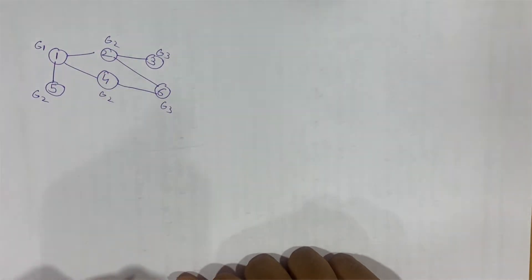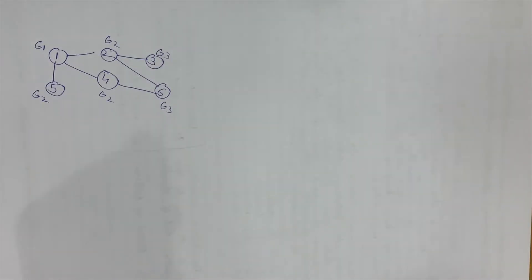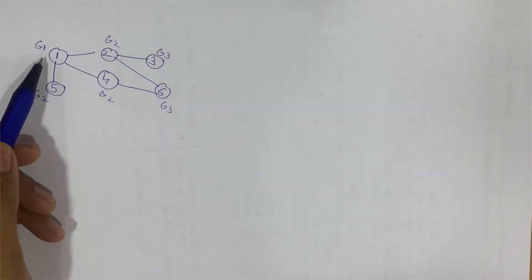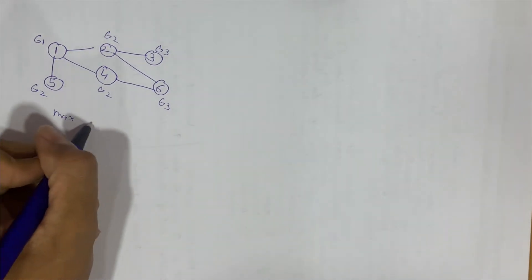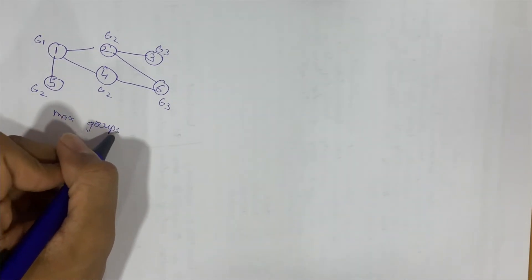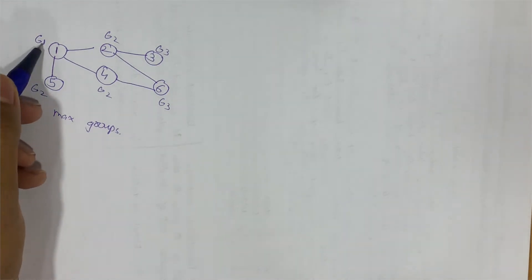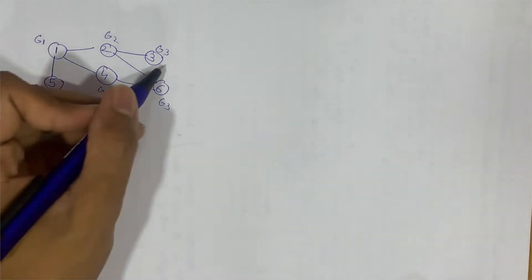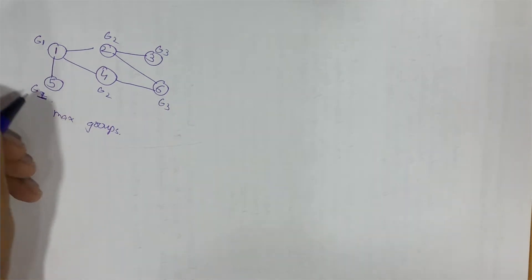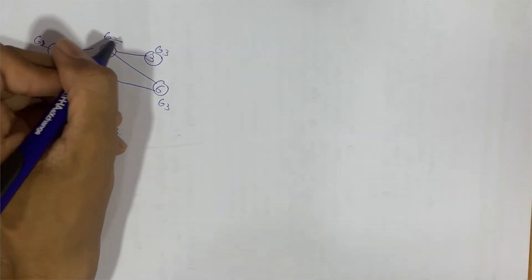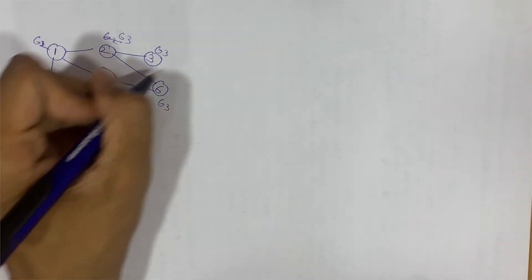One way of assigning groups is group 1 to node 1, group 2 to node 2, and so on, but this does not yield the maximum number of groups. We can optimize by assigning group 1 to node 5, group 2 to node 1, group 3 and group 4 to other nodes — this way we can form 4 groups.